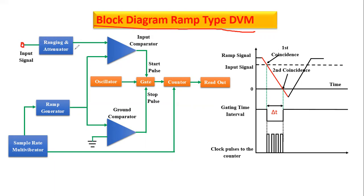Next is the comparator. Comparator means we are comparing two inputs, two values. Here we are comparing two values. This is why it is called ramp type DVM — because the function is based on the ramp signal. This ramp signal is based on a continuously decreasing waveform.